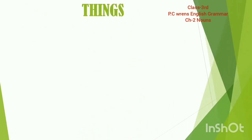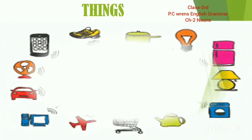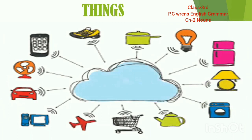Things — things means cheezein. As you can see on the screen, there are pictures of many things: an aeroplane, computer, car, fan, mobile, shoes, fridge, lamp, etc. These are the examples of things.